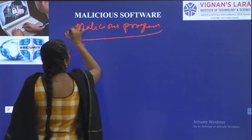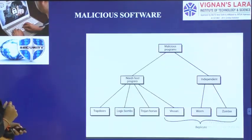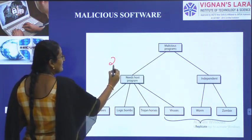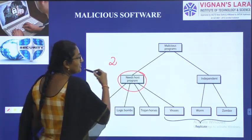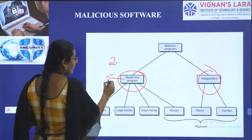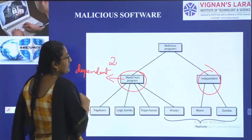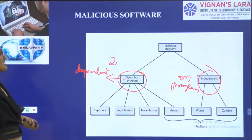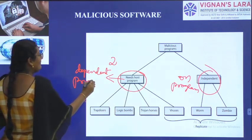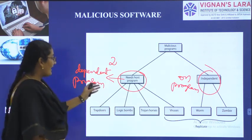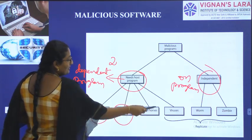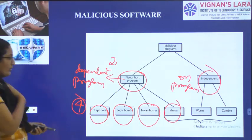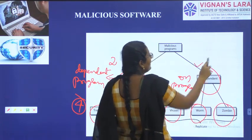Malicious programs can be divided into two types: those which are dependent on a program, and those which are independent on a program. Dependent types include trapdoors, logic bombs, Trojan horses, and viruses. Independent types include worms and zombies.